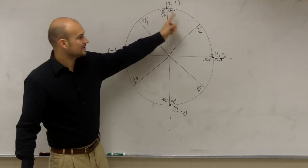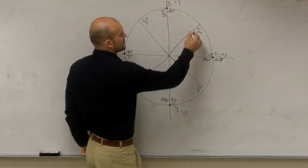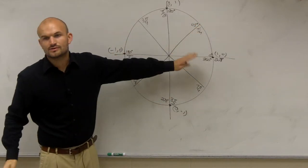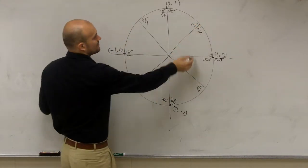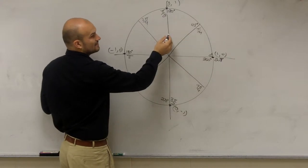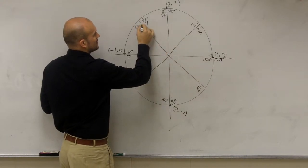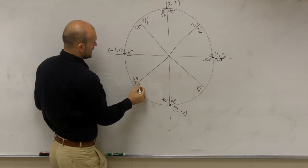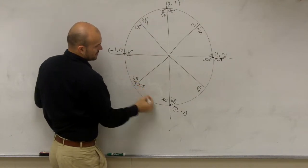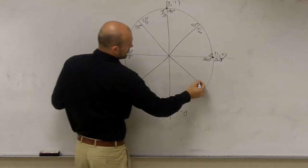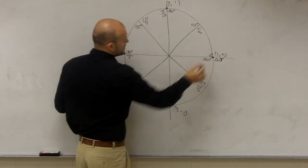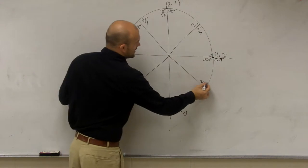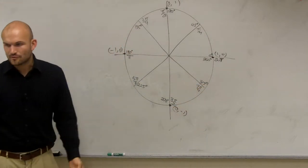Now let's go back to the degrees. If here's 90 degrees, then that means this degree is 45 degrees. So now all we're going to do is just keep on adding 45 degrees: 45, 90, 135, 180, 225, 270, 315, and 360. You just keep on adding 45 degrees.